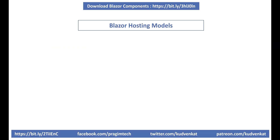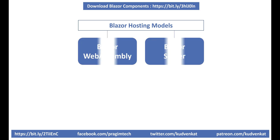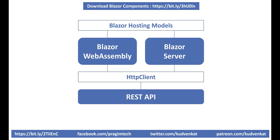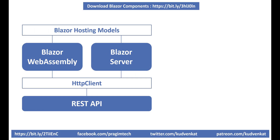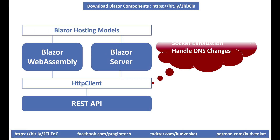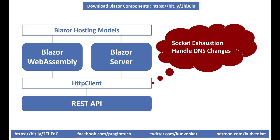In both the hosting models — Blazor WebAssembly and Blazor Server — we use the same HttpClient class. There are several approaches to use this HttpClient class. A word of caution though: if not implemented correctly, it can lead to problems like socket exhaustion or failing to handle DNS changes.